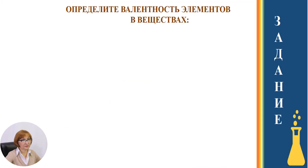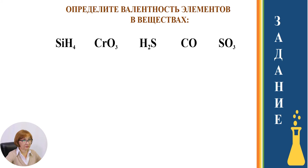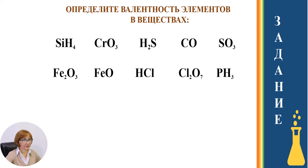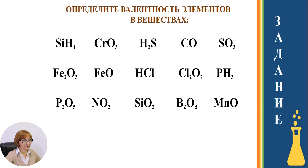Предлагаю выполнить следующее задание: определить валентность элементов в веществах. SiH4, CrO3, H2S, CO, SO3. Следующий ряд: Fe2O3, FeO, HCl, Cl2O7, PH3. И следующий ряд: P2O5, NO2, SiO2, B2O3, MnO.